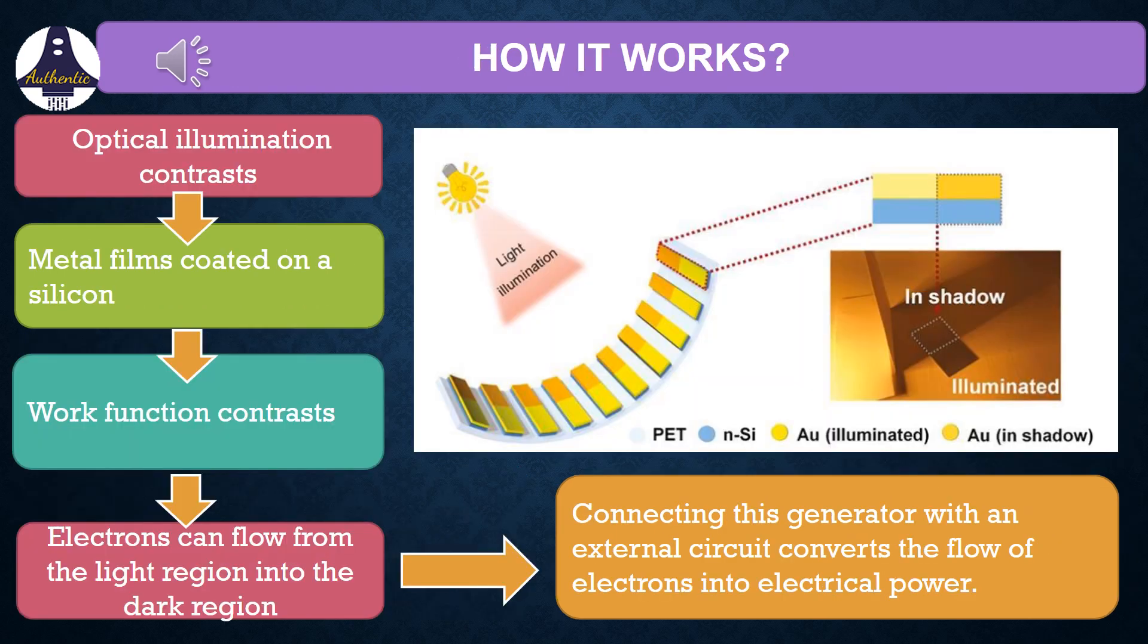Now how does this shadow effect electric generator work? The optical illumination contrast or the shadow falls over the metal films coated with silicon. And this produces a contrast or variation in the work function. And this produces a flow of electrons from the light region into the dark that is shadow. And by connecting this generator with an external circuit, it converts this flow of electrons into electrical power.